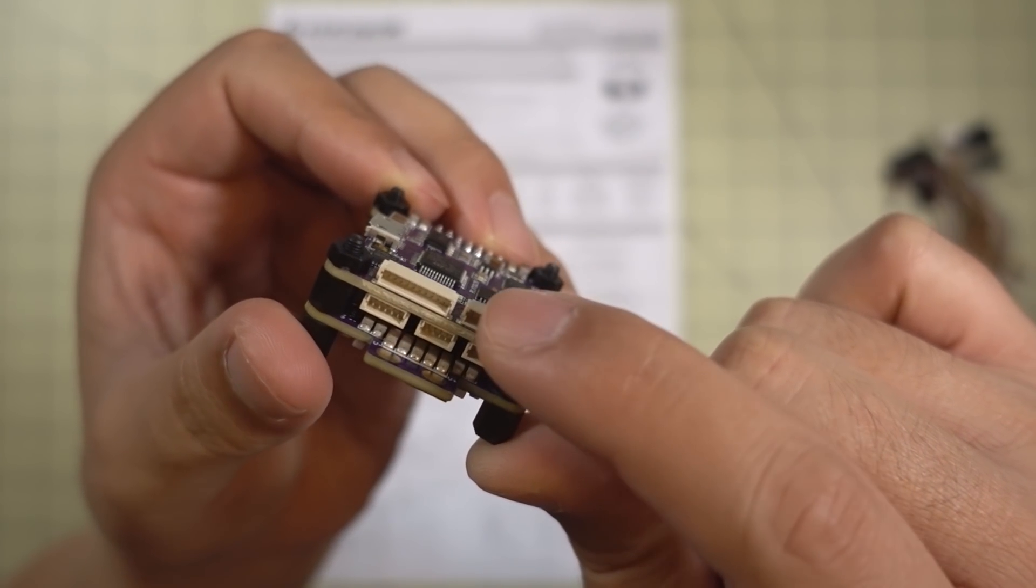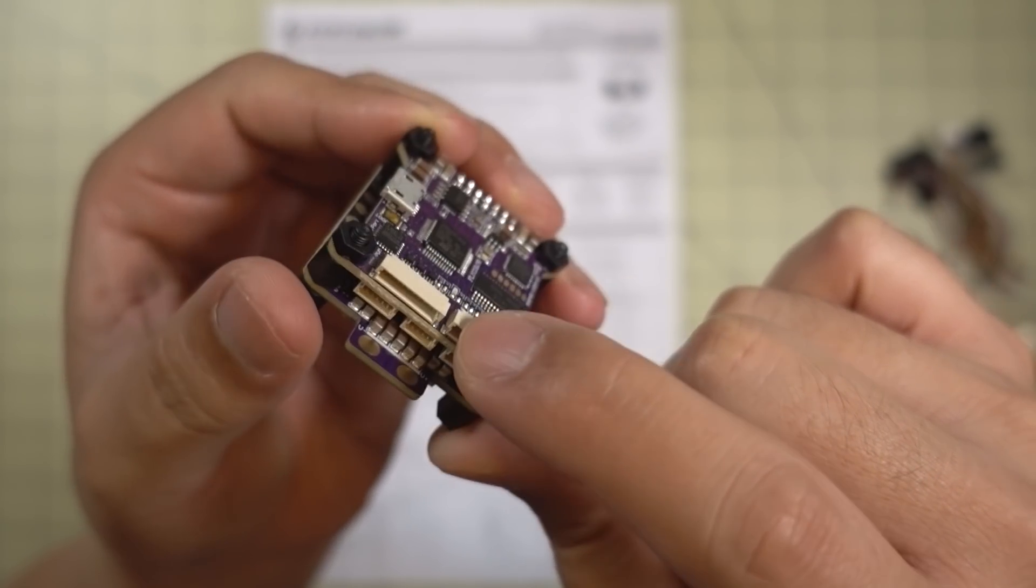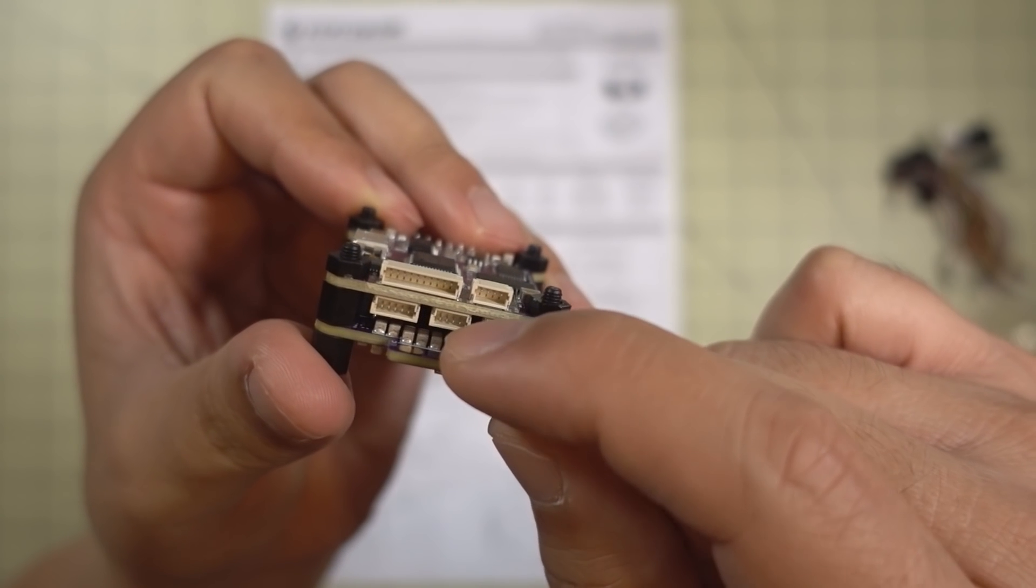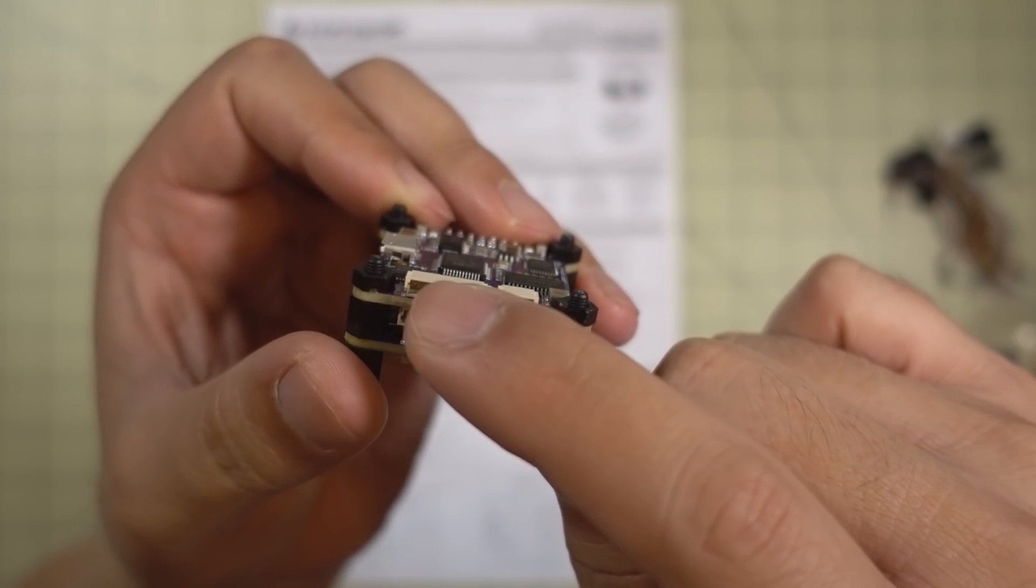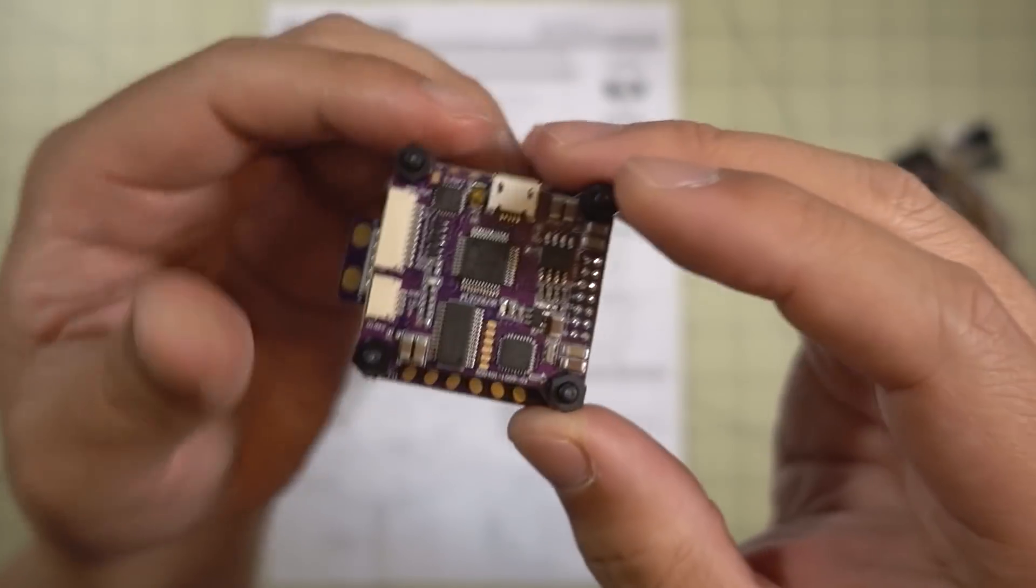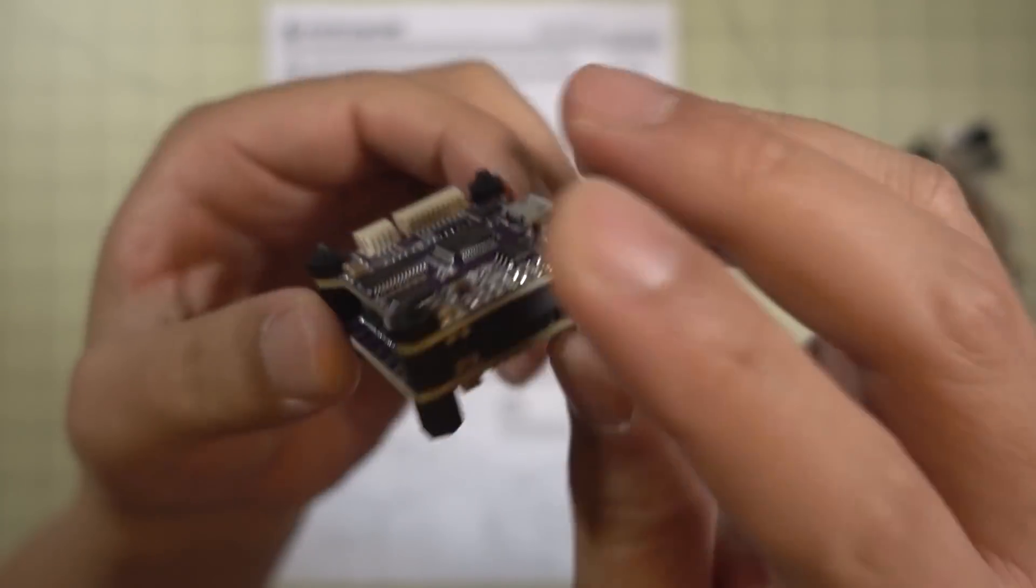That outputs 12 volts. And this is video out to your video transmitter. This one here is for your serial receiver and then this one is for your PWM receiver if you happen to have one of those.